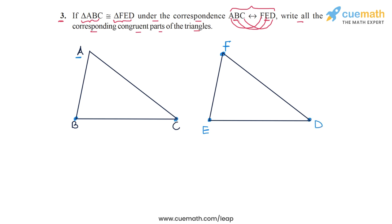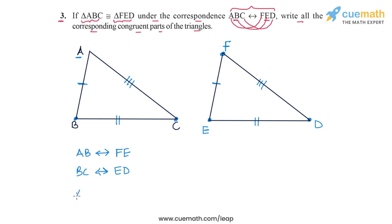So these are the two congruent triangles, and now it's easy to write the corresponding congruent parts. Let's first write the corresponding sides. AB corresponds to FE, BC corresponds to ED, and AC corresponds to FD.